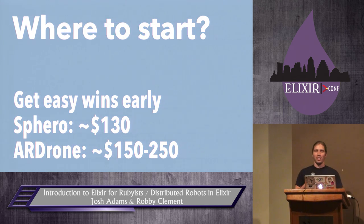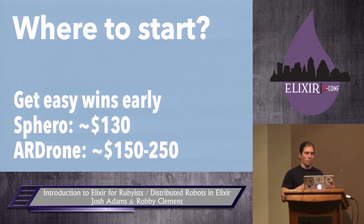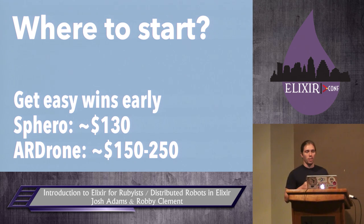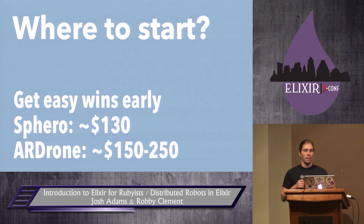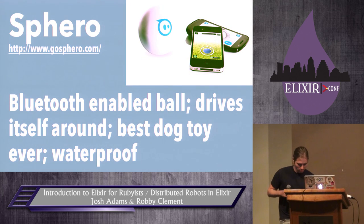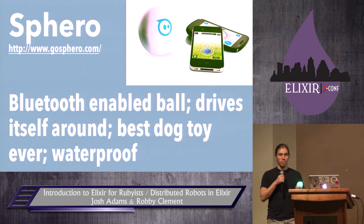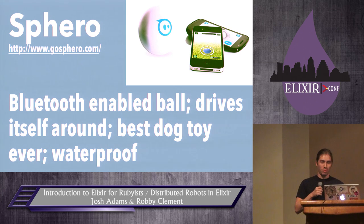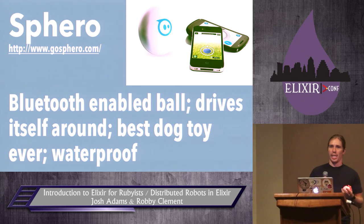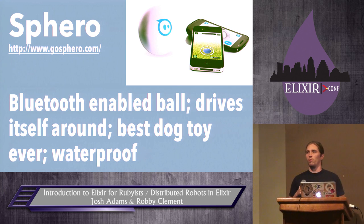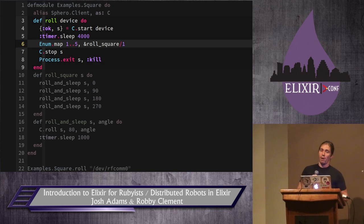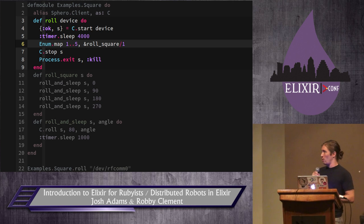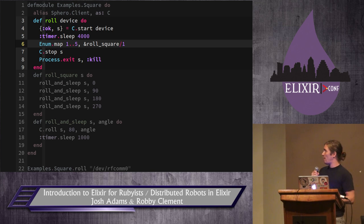Where should you start? Don't start with a giant project — it's very easy to get bogged down with small hardware problems like resistor values. Just buy one of these toys and get started playing with them. The Sphero is just a ball with a motor inside. He's Bluetooth controlled via serial port. They're really good for teaching kids — they can see real world results of the code they're typing. Using our Sphero library, you start the Sphero client, call roll_square five times, then call the stop function, and exit your process.